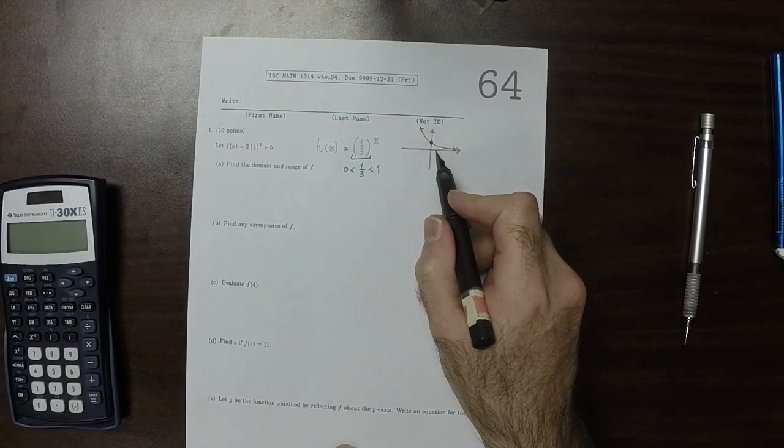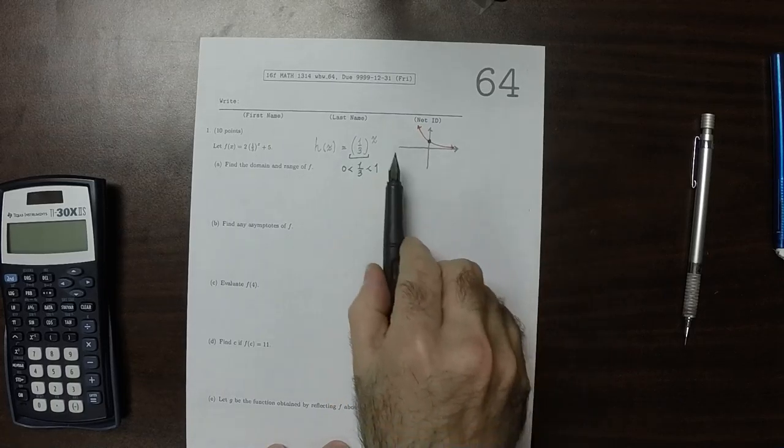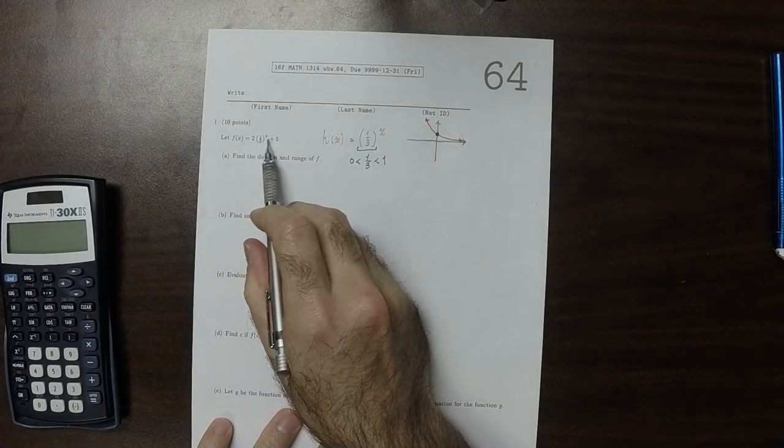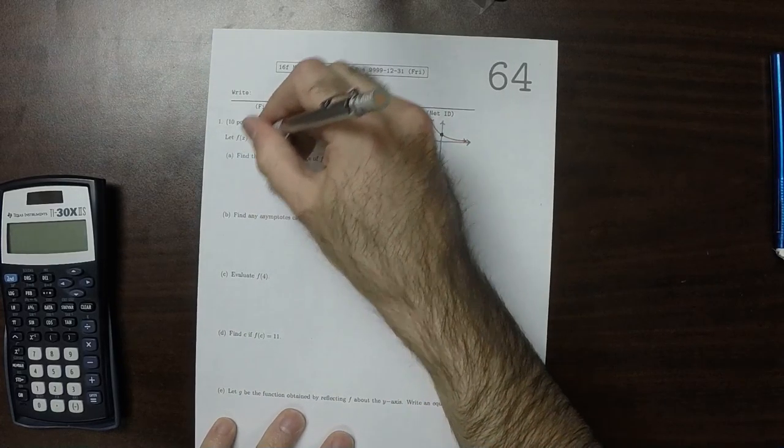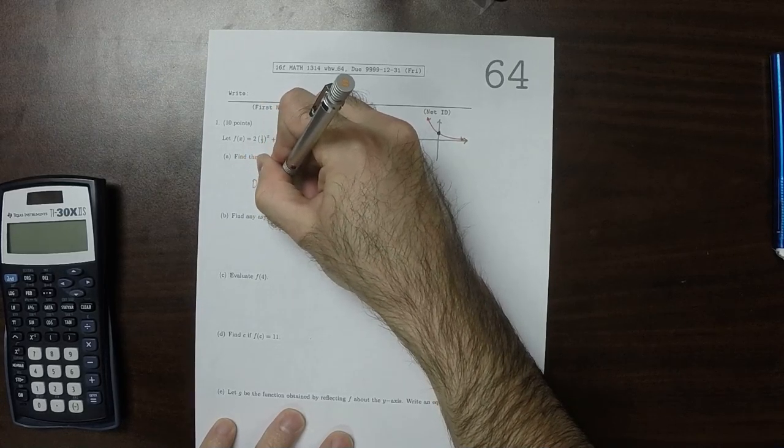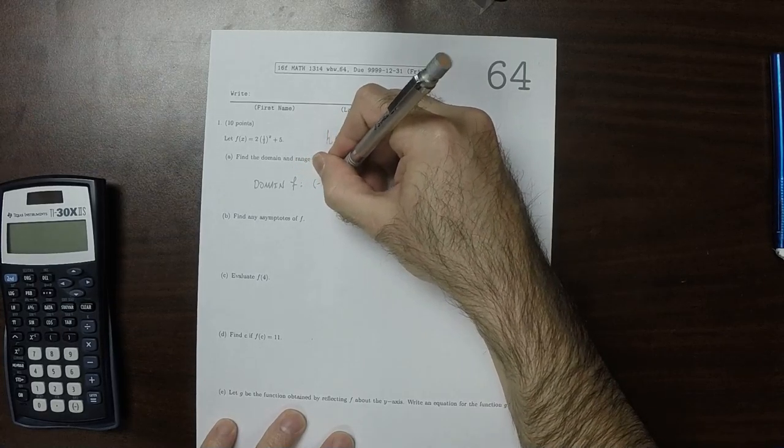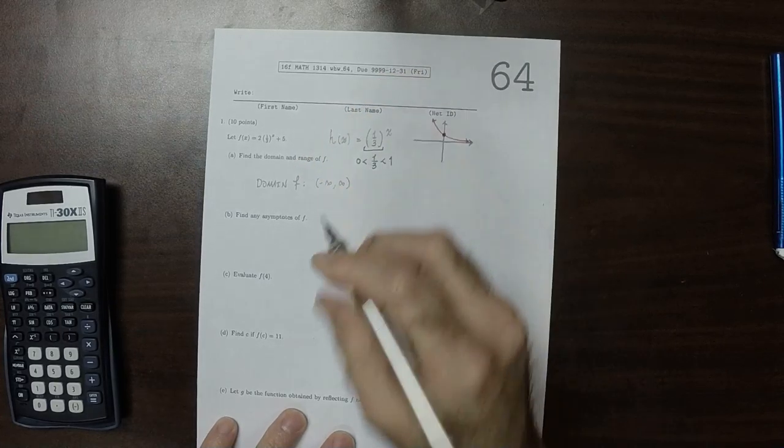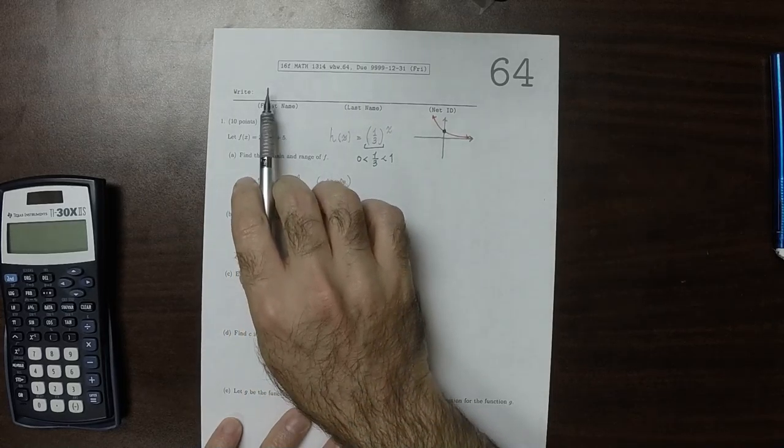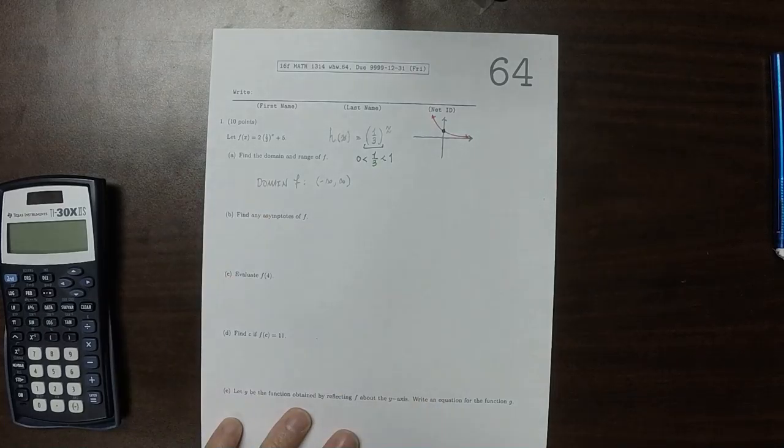This particular function, its domain is any x at all. You can plug in any x, and that doesn't change here. The domain of f is still all x, negative infinity to infinity, because the only effect that the plus 5 has is it shifts the plot up, and the multiply by 2 makes it taller.